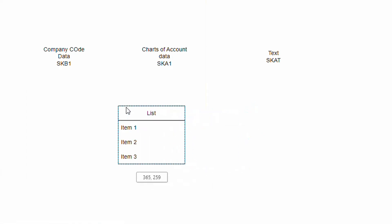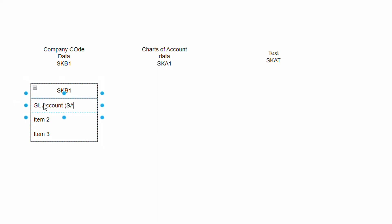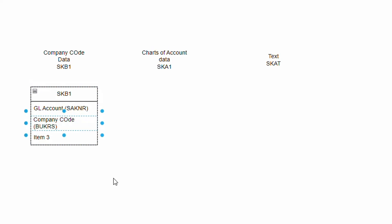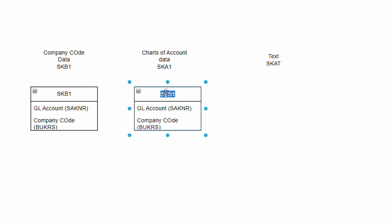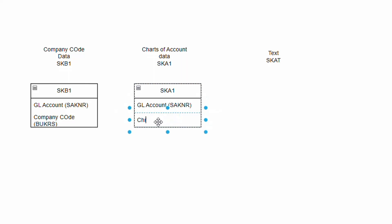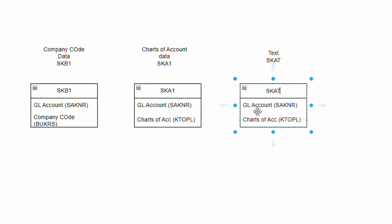In SKB1, the important fields are GL account number (SAKNR) and company code (BUKRS). In SKA1, we have GL account (SAKNR) and charts of account (KTOPL) instead of company code. In SKAT, we have the GL account and GL account text - both long text and short text.